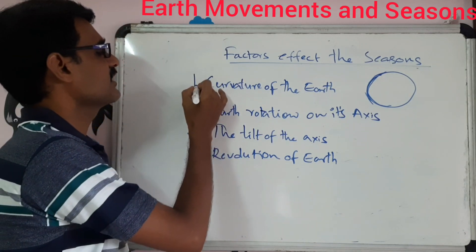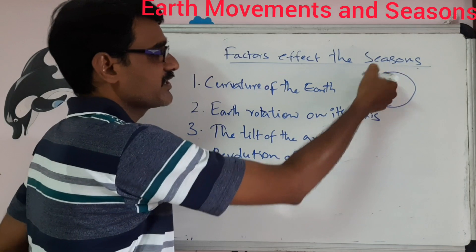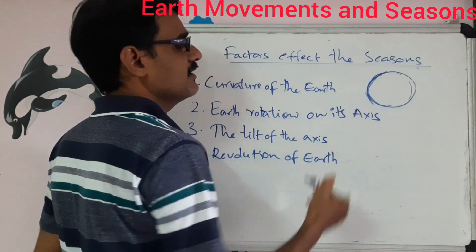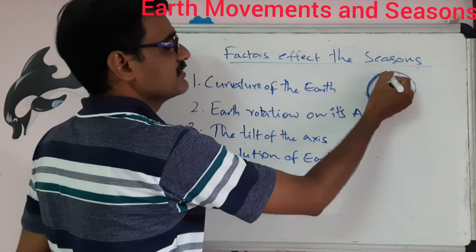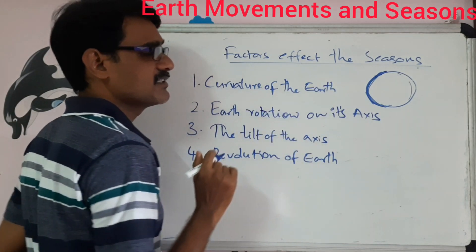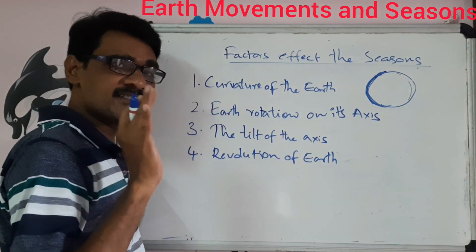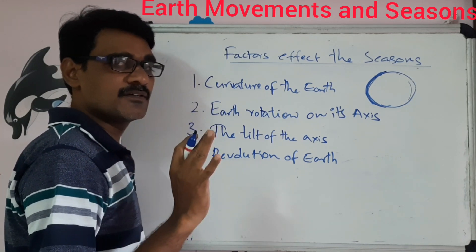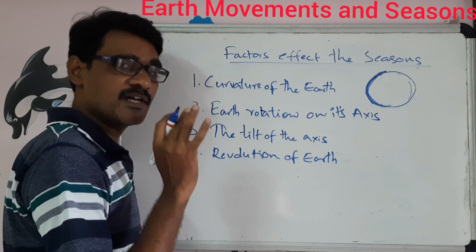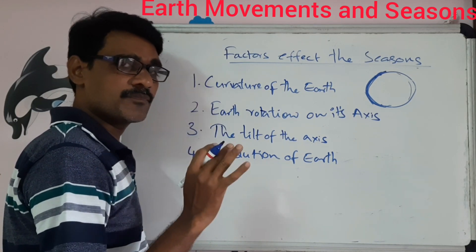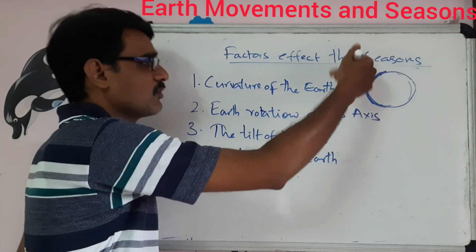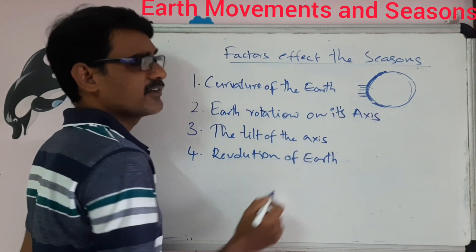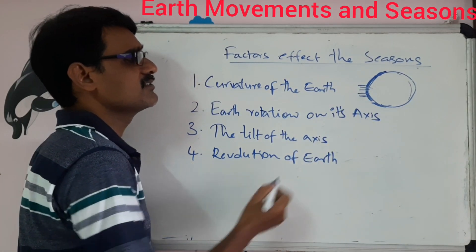The first factor is the curvature of the earth, which we already learned about. The earth is in a spherical shape, and due to this curvature, all parts on the earth's surface are not receiving the same amount of heat and light from the sun. Sun rays are not falling on the same area throughout the earth's surface.